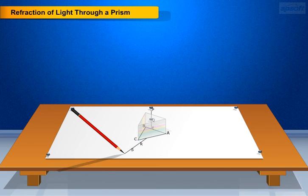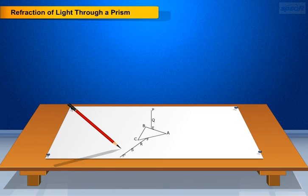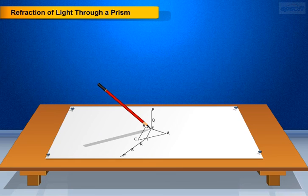Remove the pins and the glass prism and draw a straight line FF' which passes through the points R and S, and makes some angle with the face AC. Join points E and F. The straight line PQ, EF, and FF' shows the path of the light ray.